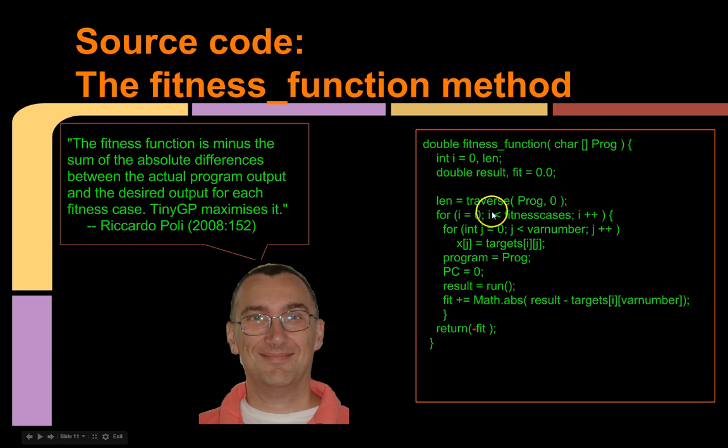A loop runs through all the fitness cases. Each x variable, we only stipulated one in this problem.dat file, is loaded with the proper input field, and then the absolute difference between the result of each tree and each target value is calculated. After that loop is complete, the method returns a negative fitness value in the fit variable.